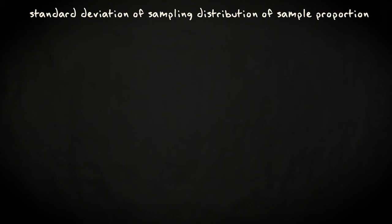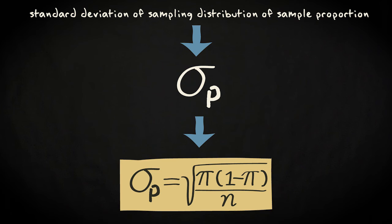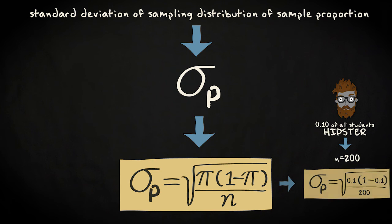There is also a straightforward formula to compute the standard deviation of the sampling distribution of the sample proportion. We symbolize the standard deviation by sigma p — sigma stands for the standard deviation, and p is added to show that we are talking about the sampling distribution in which the cases are sample proportions, not individual subjects. To compute the standard deviation, we multiply the population proportion with 1 minus the population proportion, divide the outcome by the sample size n, and take the square root. In our case, this is the square root of 0.10 multiplied with 1 minus 0.10 divided by 200, which equals 0.02.